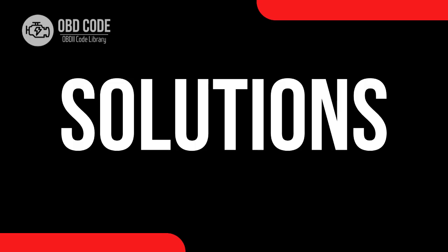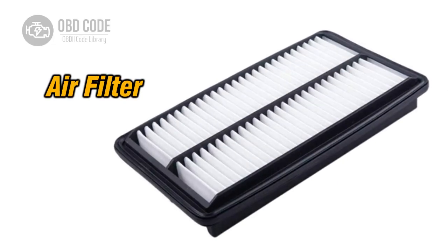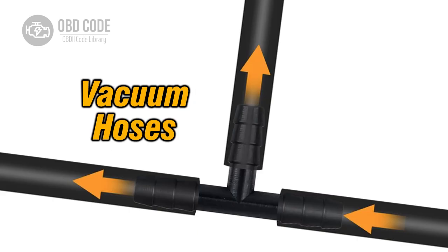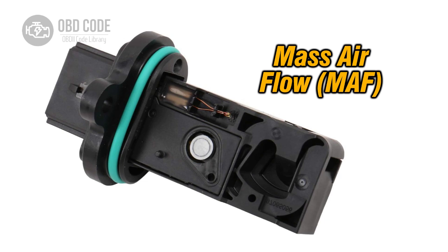Code solutions P2187: 1. Inspect and replace the air filter if it is dirty or clogged, as a dirty air filter can restrict airflow and lead to a lean condition. 2. Check for any vacuum leaks in the intake system, such as cracked or disconnected hoses, and repair or replace them as needed. 3. Clean the mass airflow sensor using MAF sensor cleaner to remove any dirt or debris that may be affecting its readings and causing a lean condition.